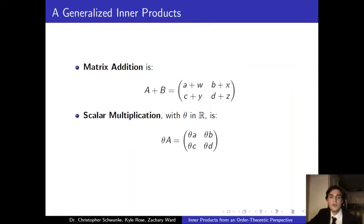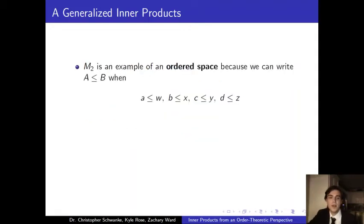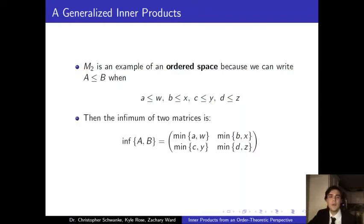Also, M2 is an example of an ordered space because we can write A is less than or equal to B when every entry in A is less than or equal to the corresponding entry in B. So we can use this to define an infimum of two matrices. We just need to take the smallest of each of the two corresponding entries. And similarly, this works for a supremum, but instead taking the largest of each of the two corresponding entries.